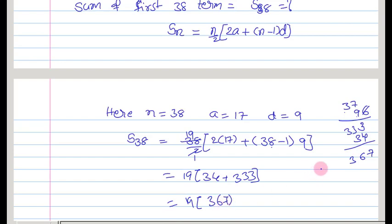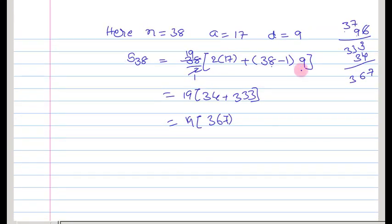19 into 367. Here on doing the product of 19 into 367, we get 6973. So this is the sum of 38 terms in this AP. Therefore, we can write that n is equal to 38 and s38 is equal to 6973.